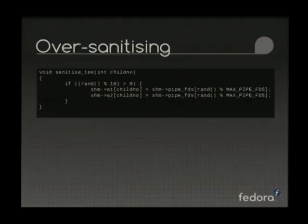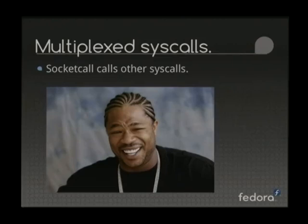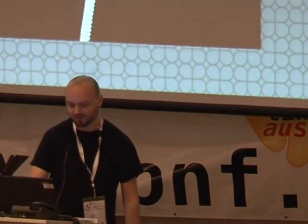Another problem is over-sanitizing arguments on the way in. If we sanitize them too much, the system calls are just going to succeed and nothing awkward will happen. So what I tend to do is randomly give them the right arguments, but not always — about a one-in-ten chance of correct arguments. Some system calls call other system calls, so you can syscall while you syscall, like socketcall. With these, it basically recurses into each other, and you have to make sure you recurse properly after returning from the system call.